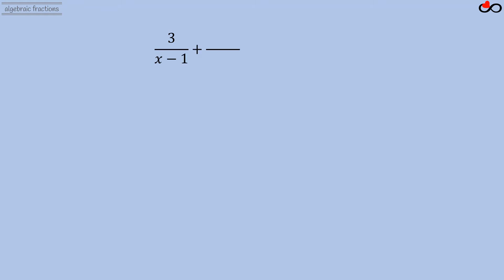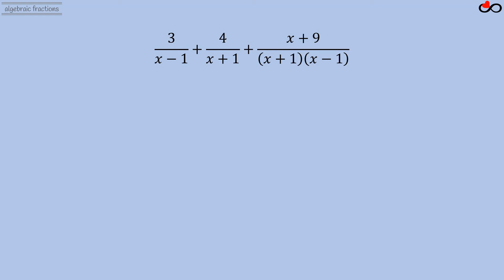We rewrite the expression with the denominators in factored form: 3 divided by (x minus 1), plus 4 divided by (x plus 1), plus (x plus 9) divided by (x plus 1) times (x minus 1).